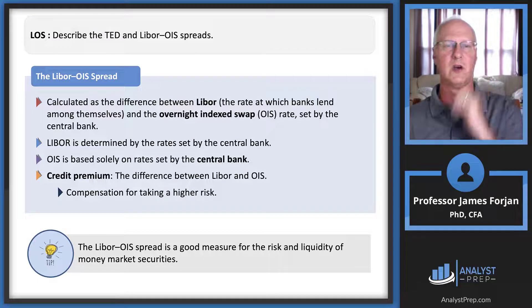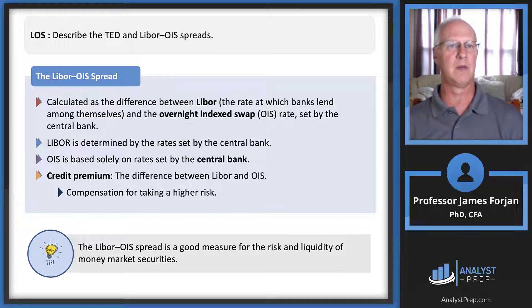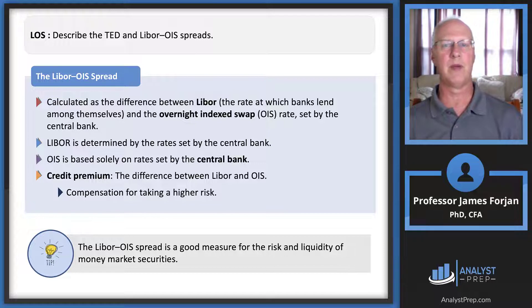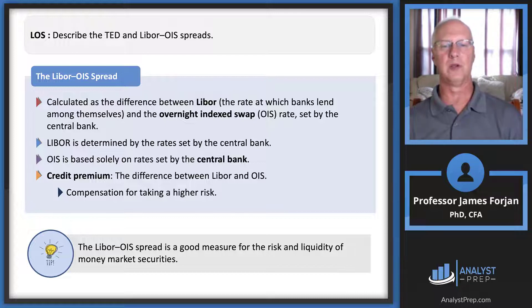The LIBOR-OIS spread is the difference between LIBOR and the overnight index swap rate. The OIS rate is probably set by the central bank by surveying many financial institutions. This spread is considered a credit premium measure.